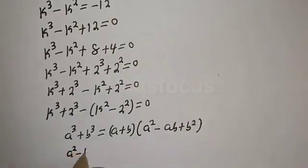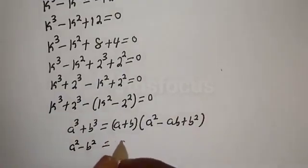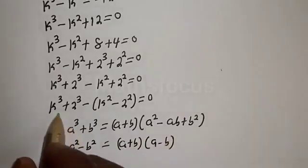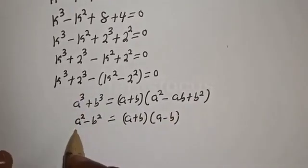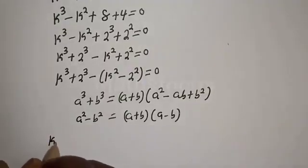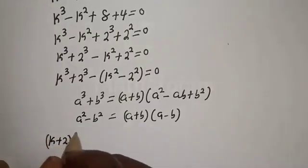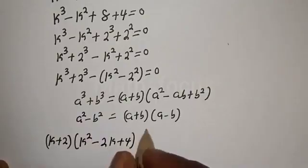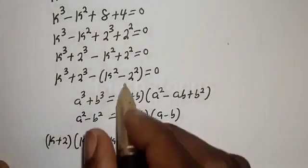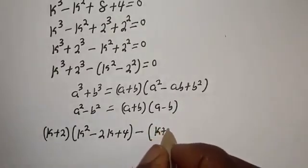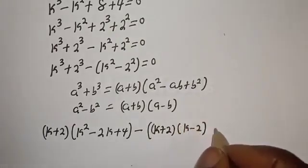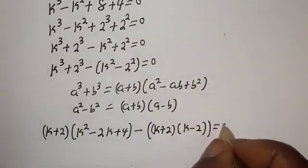If you have a squared minus b squared, this is equal to a plus b multiplied by a minus b. Then substituting, we get k plus 2 times the bracket k squared minus 2k plus 4, minus k plus 2 multiplied by k minus 2, is equal to 0.